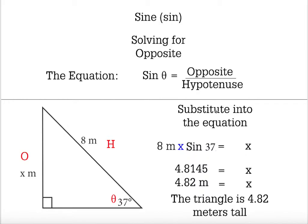And so when we write our sentence, we round the answer to the triangle is 4.82 meters tall.